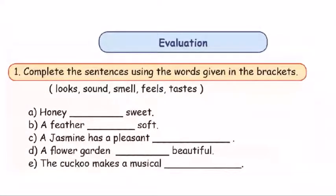Hello Kooties! In this video, we will see the evaluation of page 93. The first exercise is to complete these sentences using the words given in brackets. There are words in brackets and spaces to fill, and we will make a full sentence.